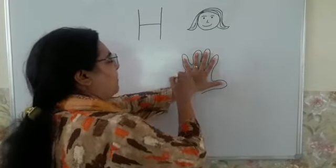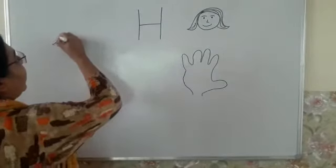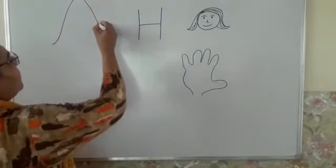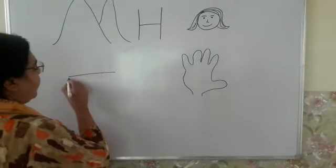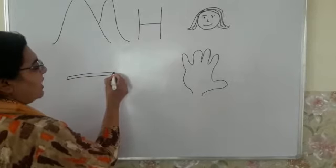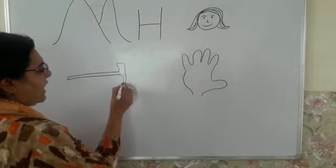So we make this hand. Hands. Hands. Hands. Hill, H for hill, H for hammer. Athodi jisse ham keel thokta hai, so this is hammer.